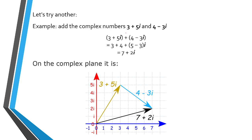The complex numbers 3+5i and 4-3i. Okay, so we combine 3 and 4, 3 plus 4, plus 5 minus 3i. So we get 7 plus 2i. So in the complex plane it is...